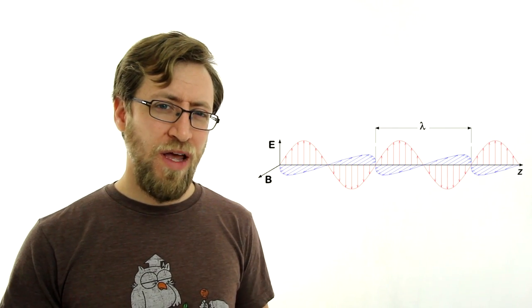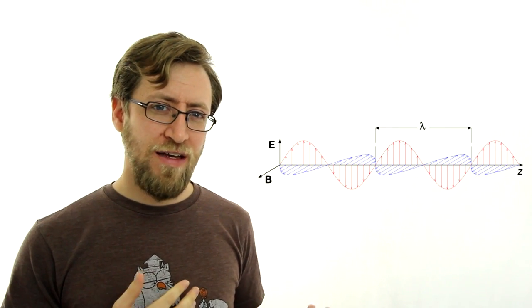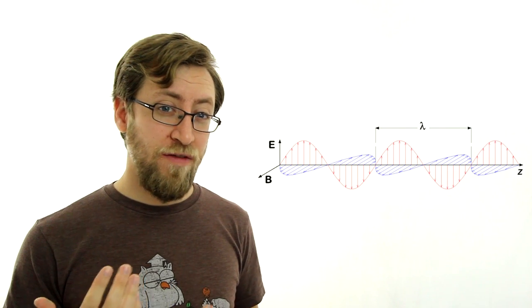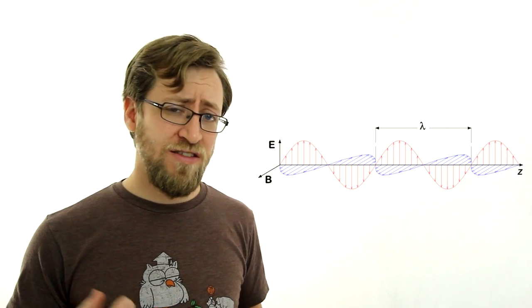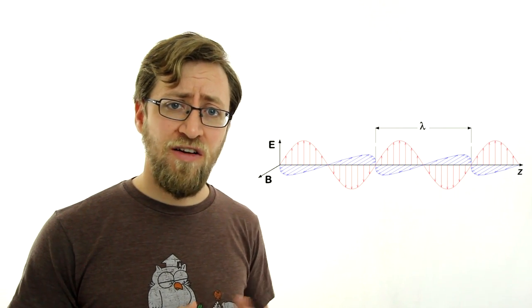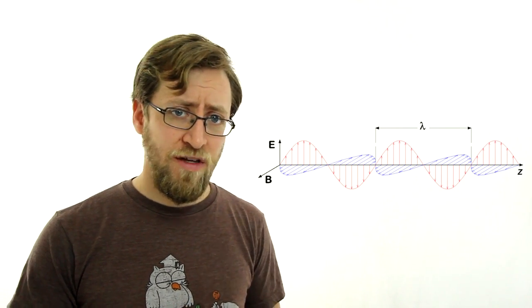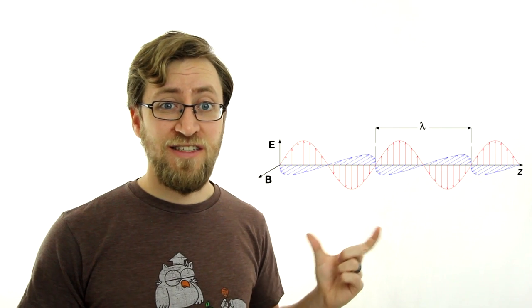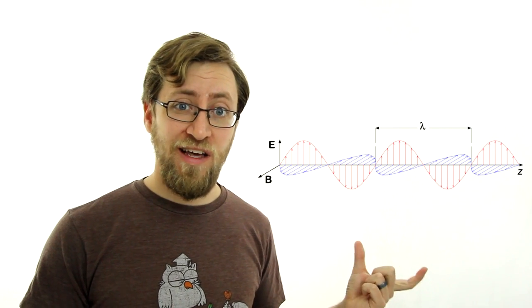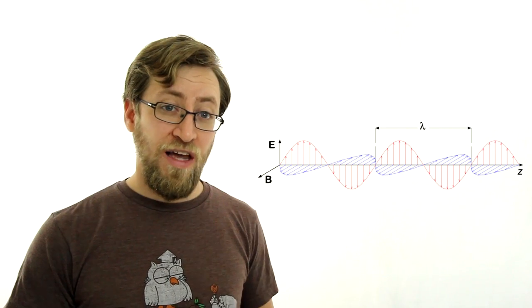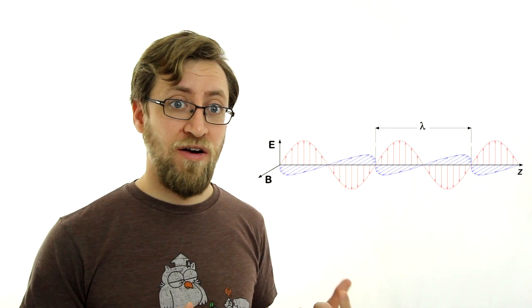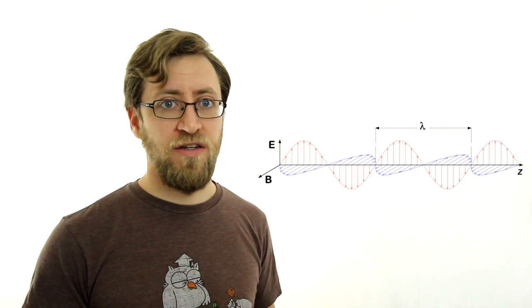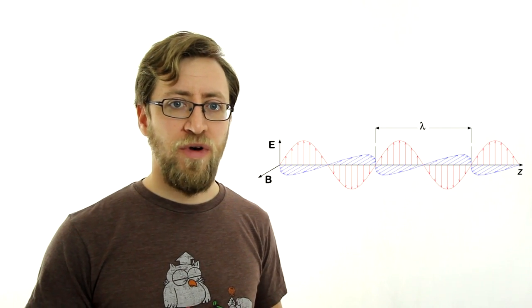Let's look at this diagram for a little bit. A wave has a phase, a wavelength, and a polarity. The phase is just the position of the crest and troughs along the wave. The wavelength is the distance between any two of them. And the polarity is the direction of our wave vector at any given point.